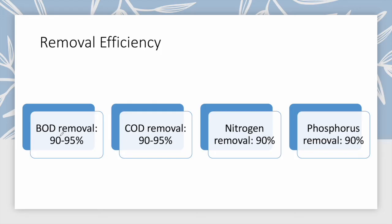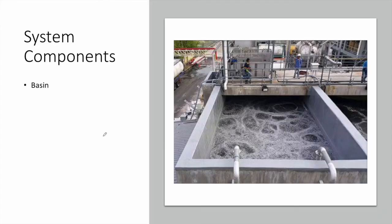A properly designed MBBR wastewater treatment plant can achieve very high removal efficiencies: up to 95% for BOD, up to 95% for COD, up to 90% for nitrogen, and up to 90% for phosphorus.